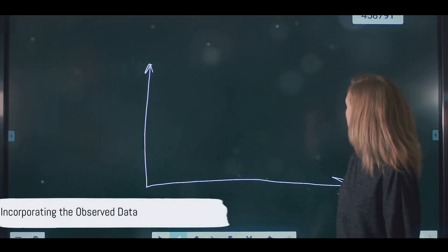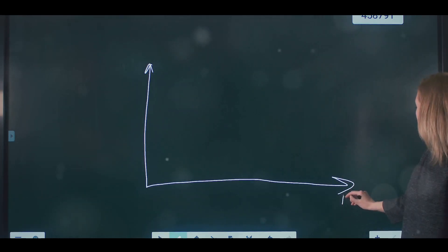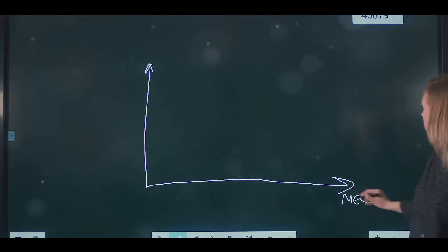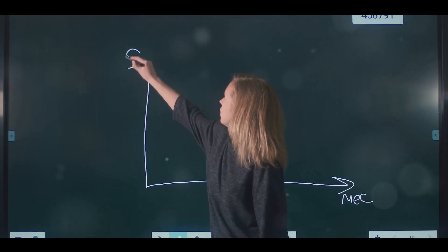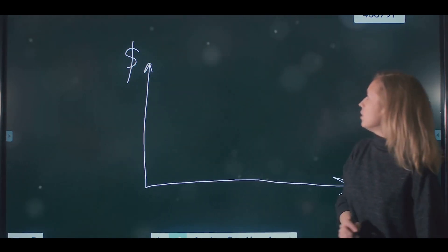The second step is to incorporate the observed data. This is done through the likelihood function, which is a mathematical function that describes the likelihood of our data given the parameters.